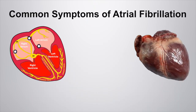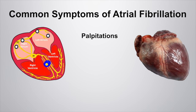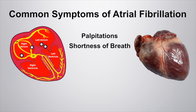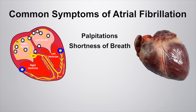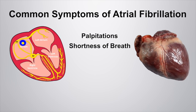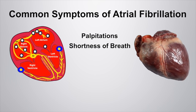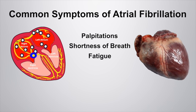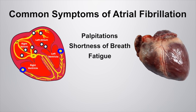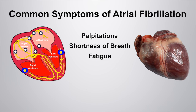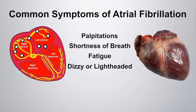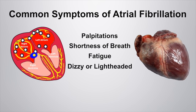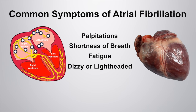Common symptoms of atrial fib: Palpitations — feelings of a fast, fluttering, or irregular heartbeat. Shortness of breath — difficulty breathing with exertion or even at rest. Fatigue — feeling weak or tired even with normal activity. Dizziness or lightheadedness — feeling faint or unsteady. Remember, the heart rate in atrial fib can be fast or slow and still cause these symptoms.